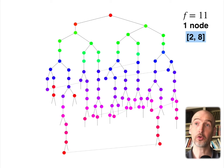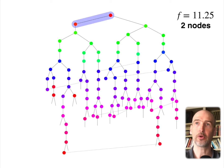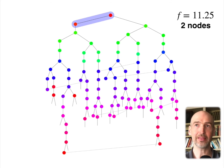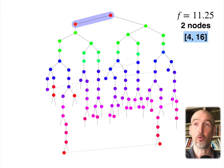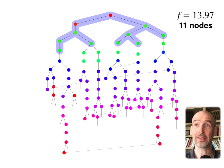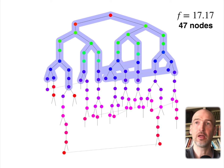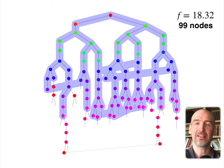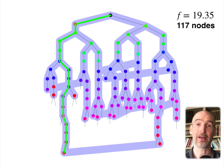We ask our oracle and our oracle says: if you just increase your F cost to 11.25, you'll do two node expansions, which will be within that limit. We ask the oracle again: give me the next F cost where I'm going to do four node expansions. The oracle would say: if you want between four and 16 node expansions, then use 13.97 — that'll give you 11 nodes. Again we continue: now we want between 22 and 88. The oracle would say use 17.17, that'll give you 47 nodes. If we can continue this process, we would see the tree continue to grow exponentially until we find the solution.